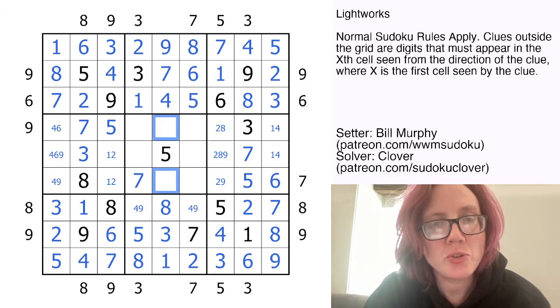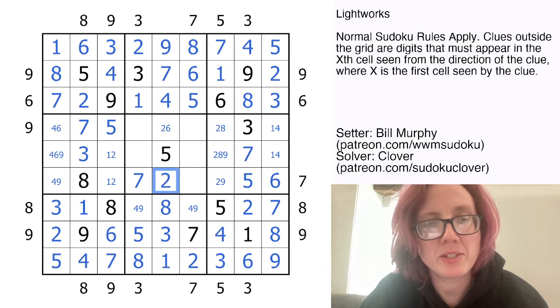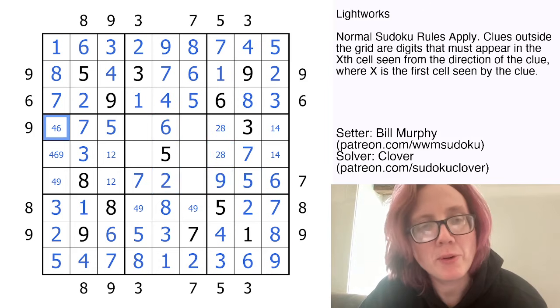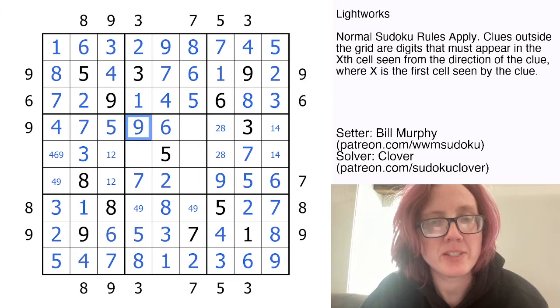These are going to be 2 and 6 to finish the column. And because I have a 6 here, that'll be a 2. That is now a 9. That's a 6. And that makes this digit a 4, finally, which tells us where the 9 is going to live.